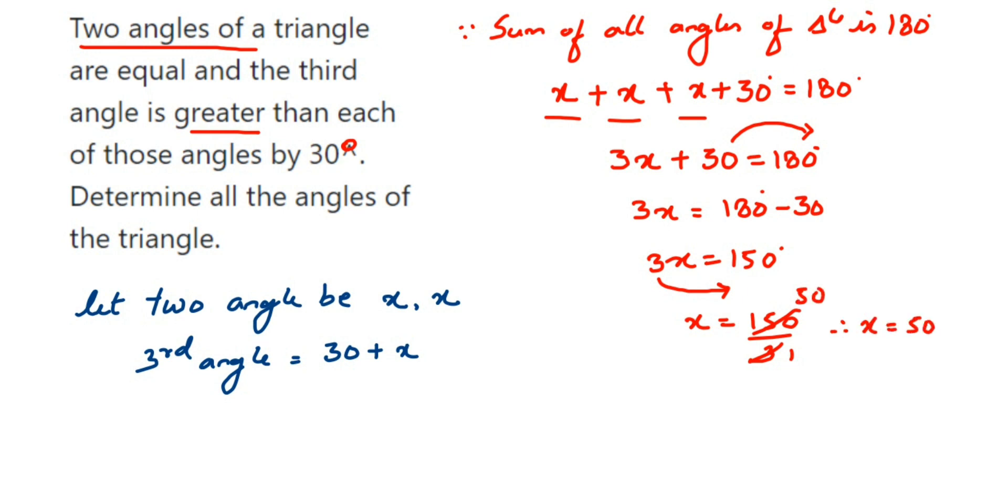This means the first two angles are 50 degrees. x and x are 50 and 50, and the third angle is 50 plus 30, which is 80.